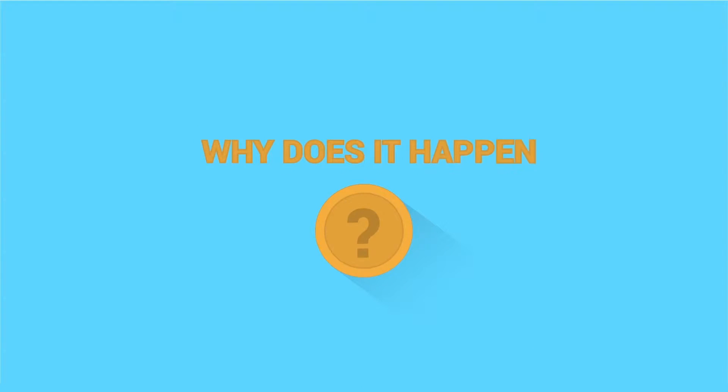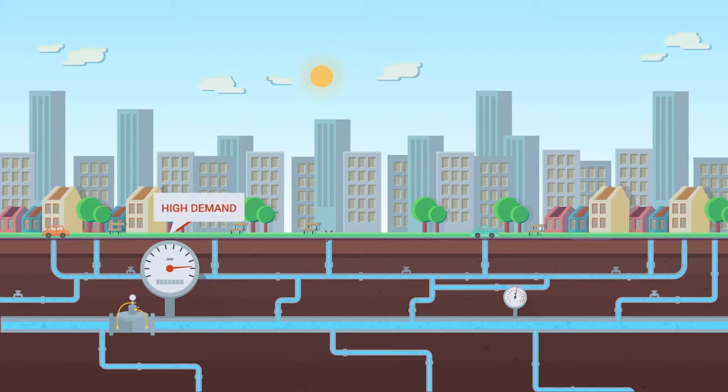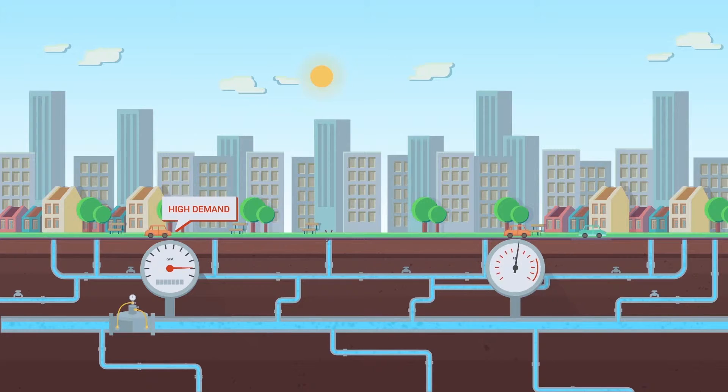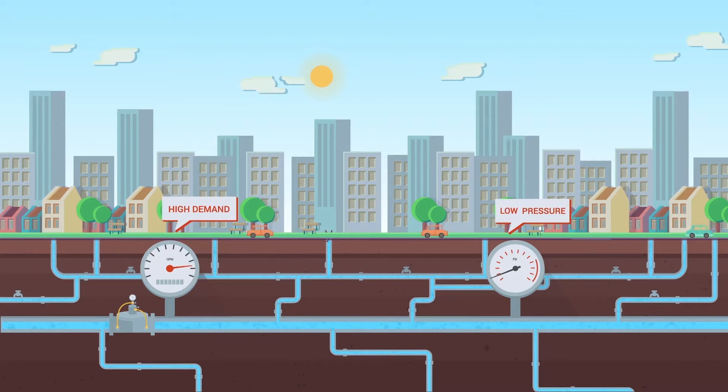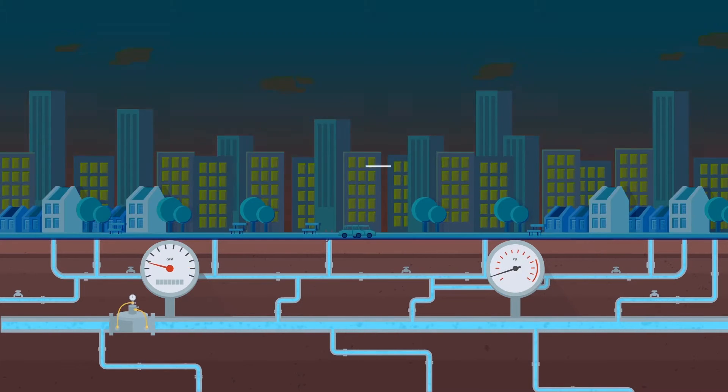Why does it happen? Water pressure in the municipal system is higher than necessary during most of the time, and especially at night when demand is lowest.